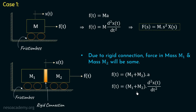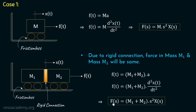We can write the equation f of t equal to m1 plus m2 multiplied with d squared x of t over dt squared. Applying Laplace transform gives f of s equal to m1 plus m2 multiplied with s squared x of s. Observe that this force equation is the same form as the single-mass case — only the total mass differs. Due to the rigid connection, the force and displacement in both masses are the same, which is why the force equation takes the same form.